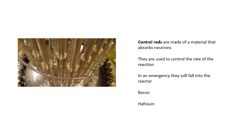Control rods: boron absorbs neutrons, so if you want to slow down the reaction you insert the control rods further into the reactor; to speed up the reaction you pull them out. In an emergency, electromagnets release the control rods and they fall into the reactor rapidly, stopping the chain reaction. Boron is the most common material used; hafnium is another option, though boron is relatively cheap.